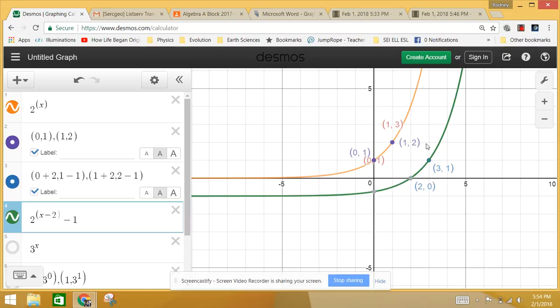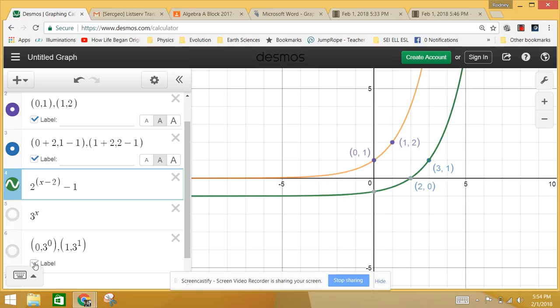We have moved to the right two and down one. So at this point, zero, one, we went over two and down one. At this point, we went over two and down one. And you can see it pretty clearly here. Okay. Now let's take a look at the more complicated one.